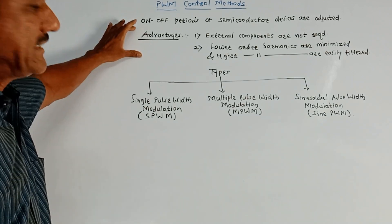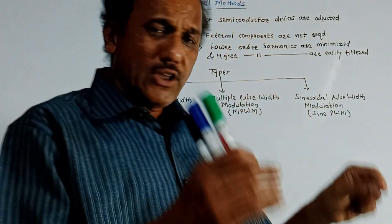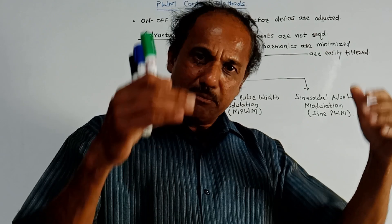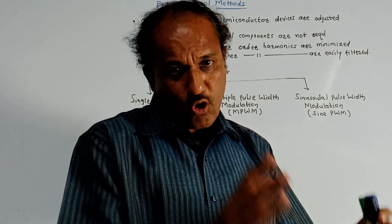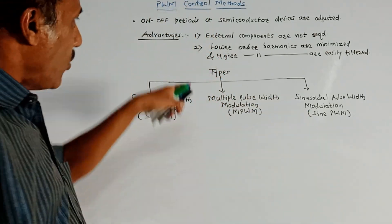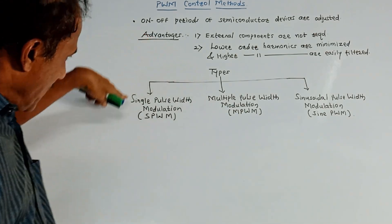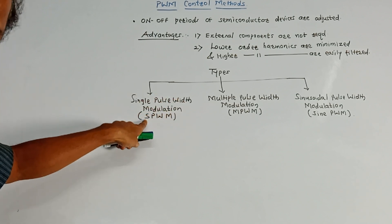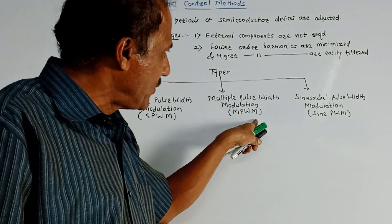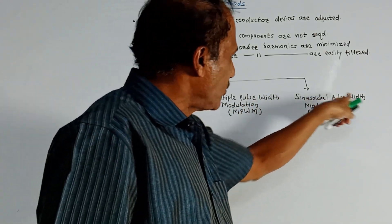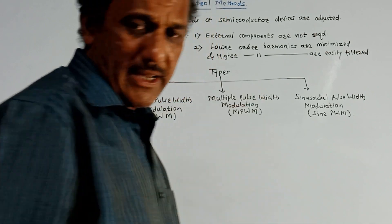Now the advantages of this method are: first, external components are not required. Second, all the lower order harmonics can be eliminated, or in the worst case lower order harmonics are minimized, whereas higher order harmonics can be easily filtered out. Now there are different types of pulse width modulation voltage control. The first type is single pulse width modulation, abbreviated as SPWM. Next is multiple pulse width modulation, that is MPWM, and third is sinusoidal pulse width modulation, that is sinPWM. Now let us discuss each type in detail.